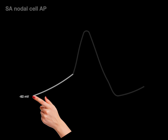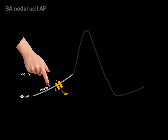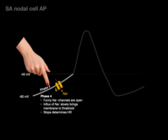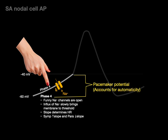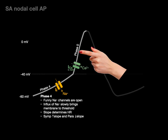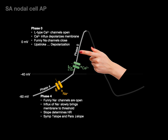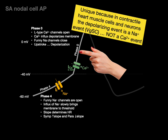Now let's review this with the graph, starting again at negative 60 millivolts. Phase four involves the IF, the funny sodium current — the funny sodium channels are open, allowing a sodium influx that slowly brings the membrane to threshold at negative 40 millivolts. This slope determines the heart rate: sympathetic innervation increases the slope, parasympathetic innervation decreases it. This is called the pacemaker potential, and it accounts for automaticity. At negative 40 millivolts, the L-type calcium channels open — this is phase zero. The calcium influx depolarizes the membrane and the funny sodium channels close. This is the upstroke, the depolarization event.